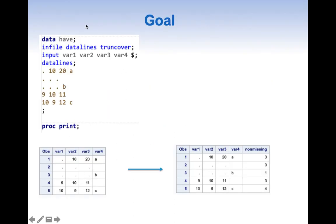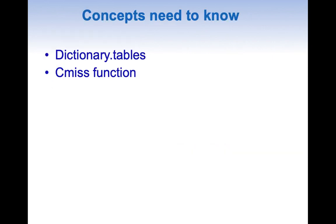We are creating a data set and what we are trying to find is the number of non-missing values. For example, here we have three non-missing values, here we have zero non-missing values because everything is missing, and here we have only one non-missing value. The basic goal is to find the number of non-missing values in a row.